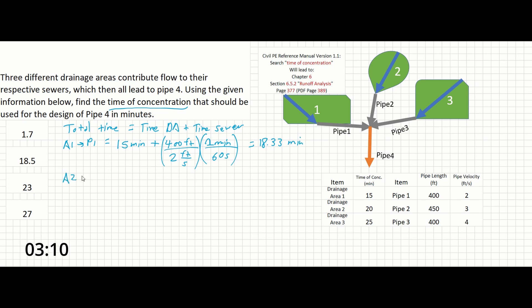A2 to P2 equals 20 minutes plus 450 feet over 3 feet per second. Again, let's convert the seconds. And that will give us 22.5 minutes.